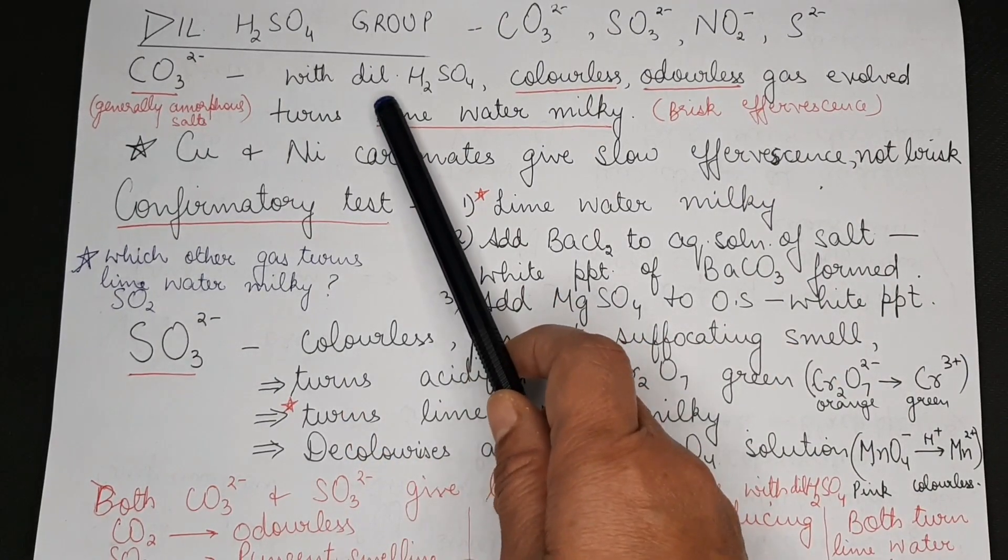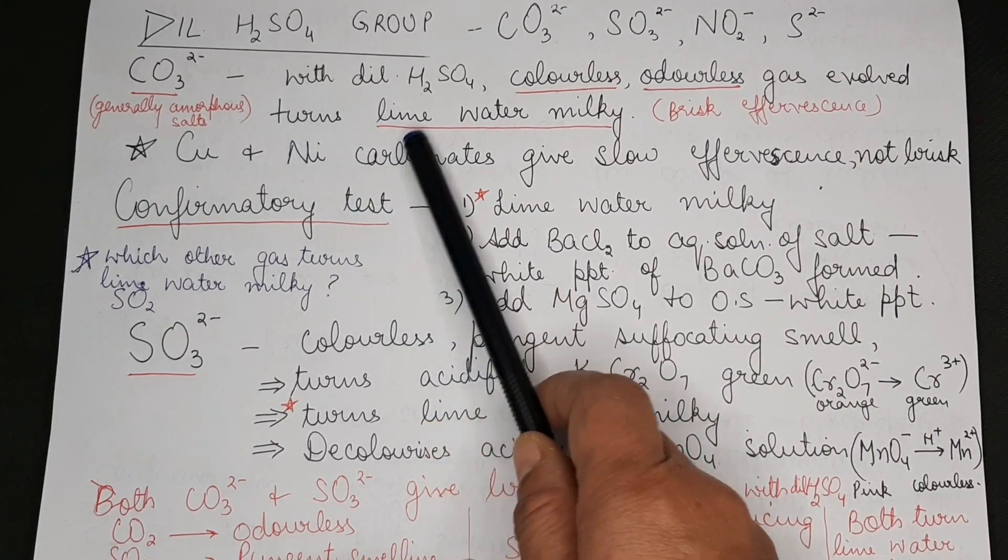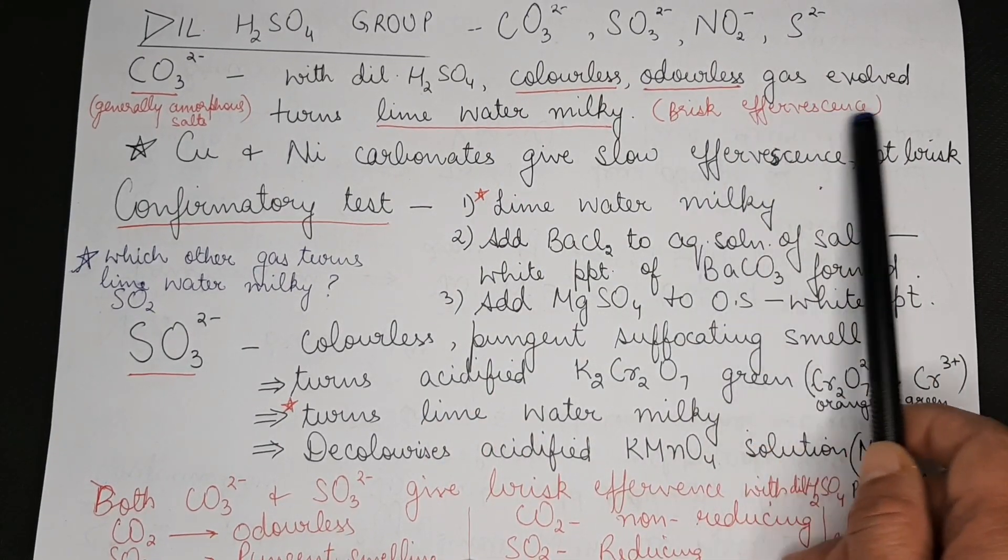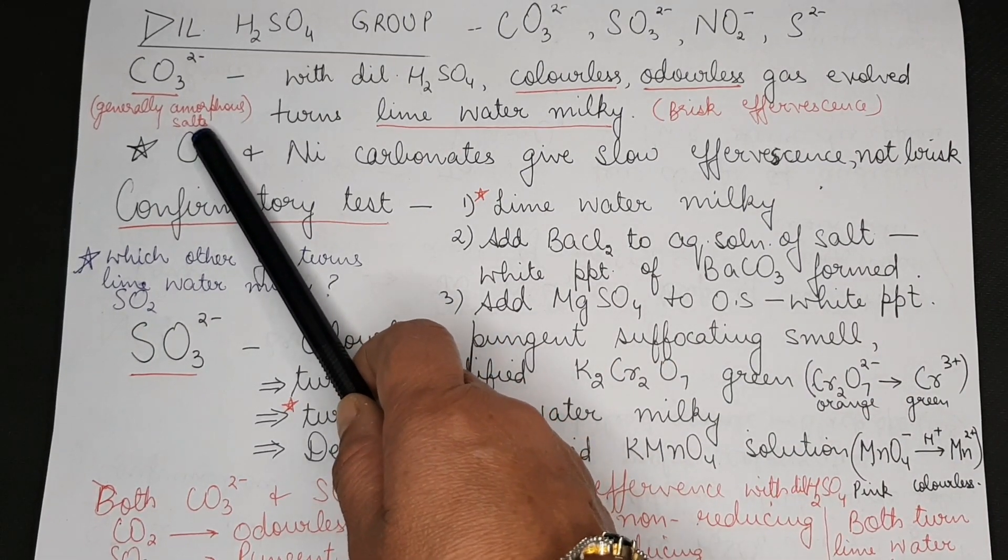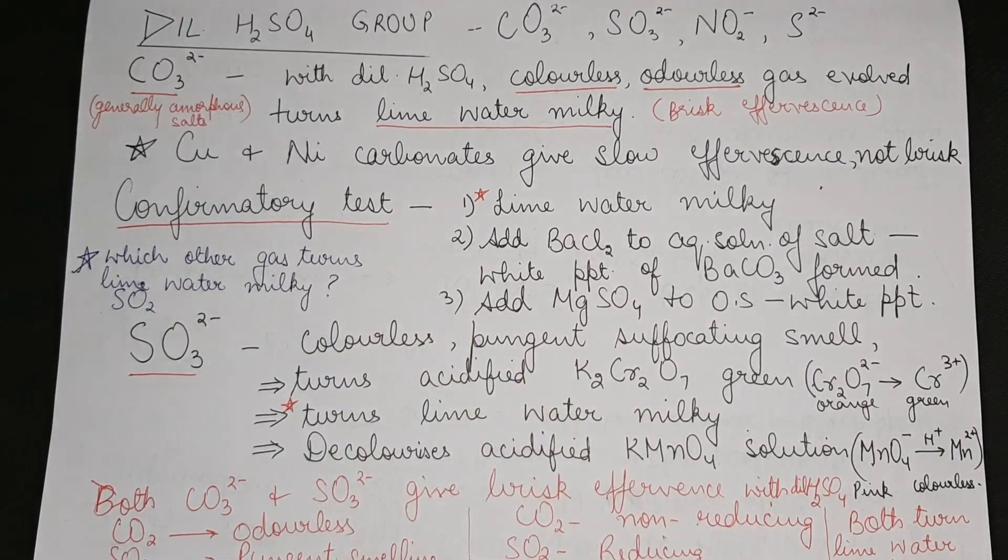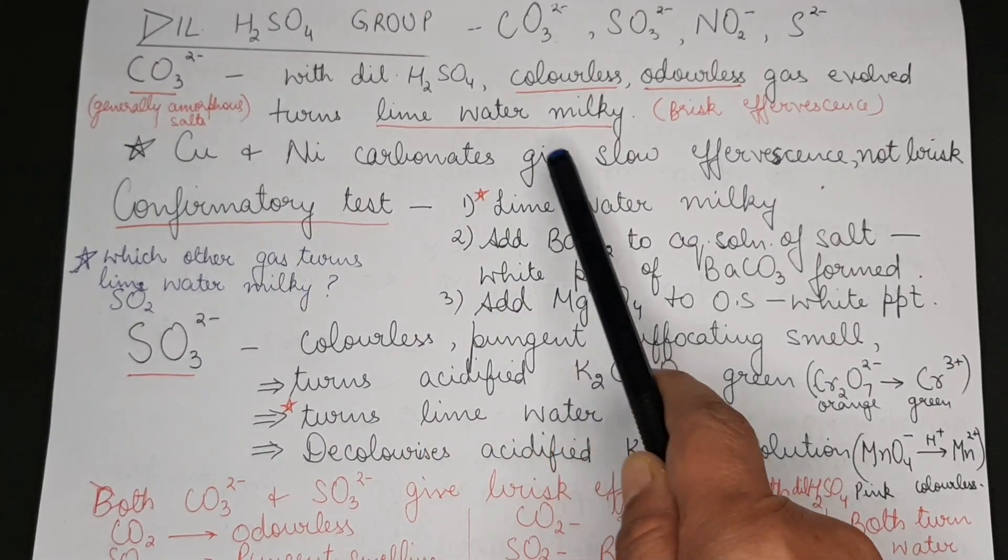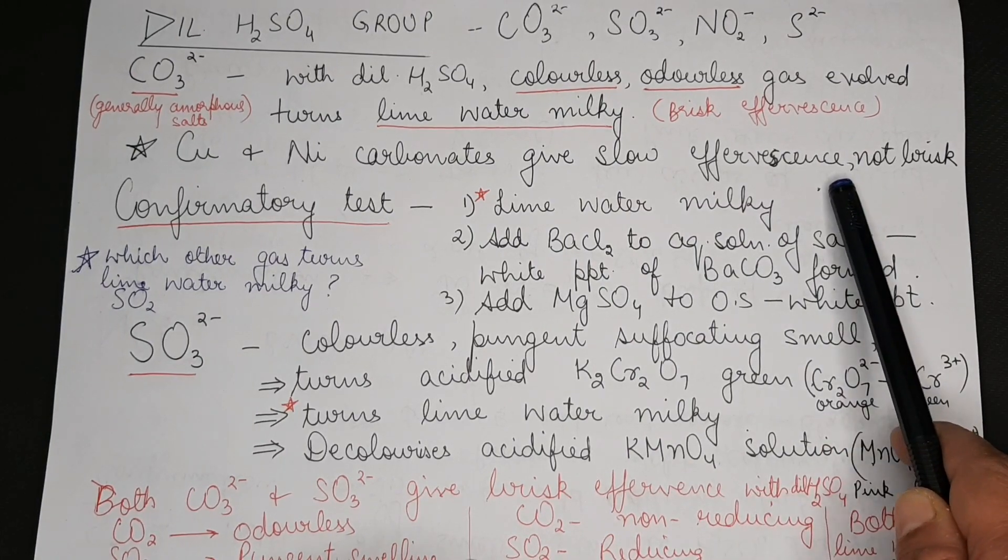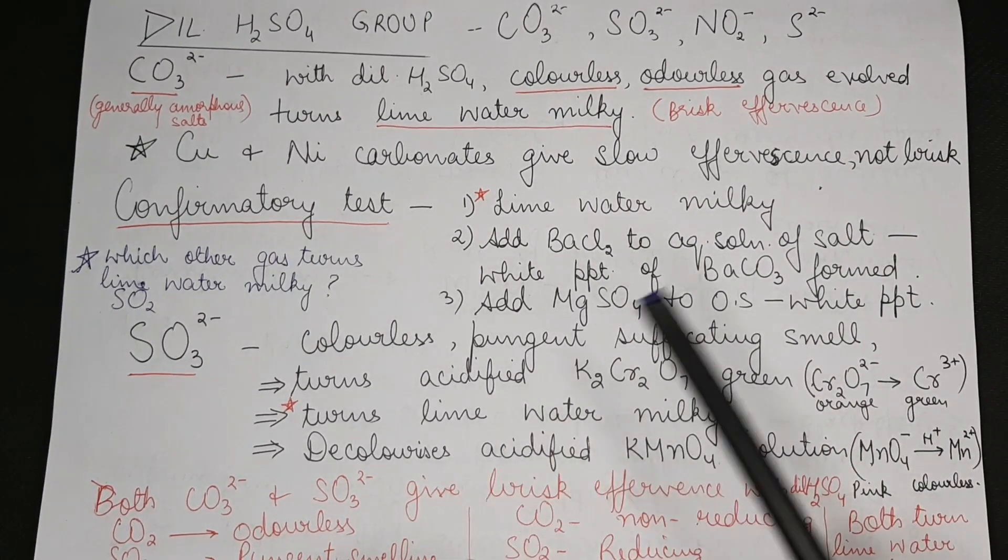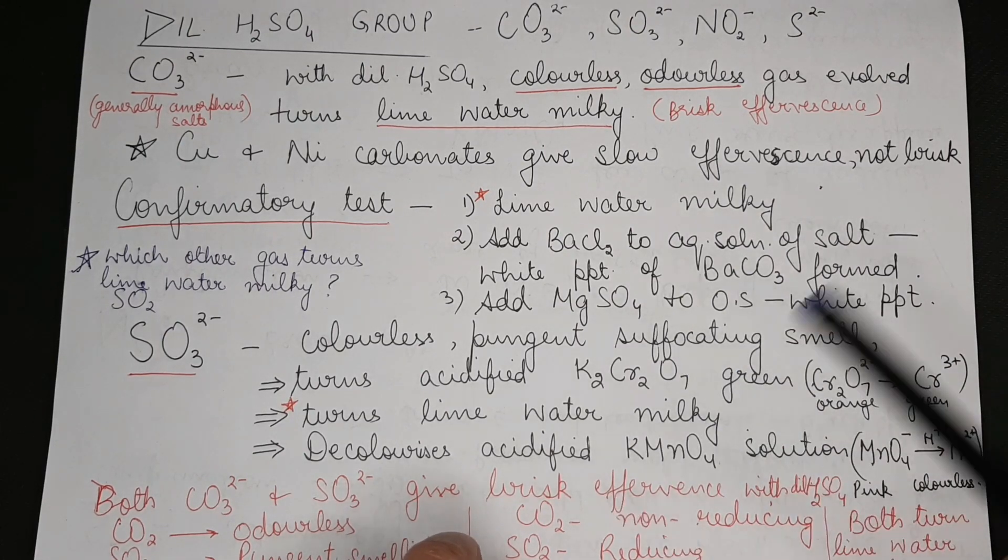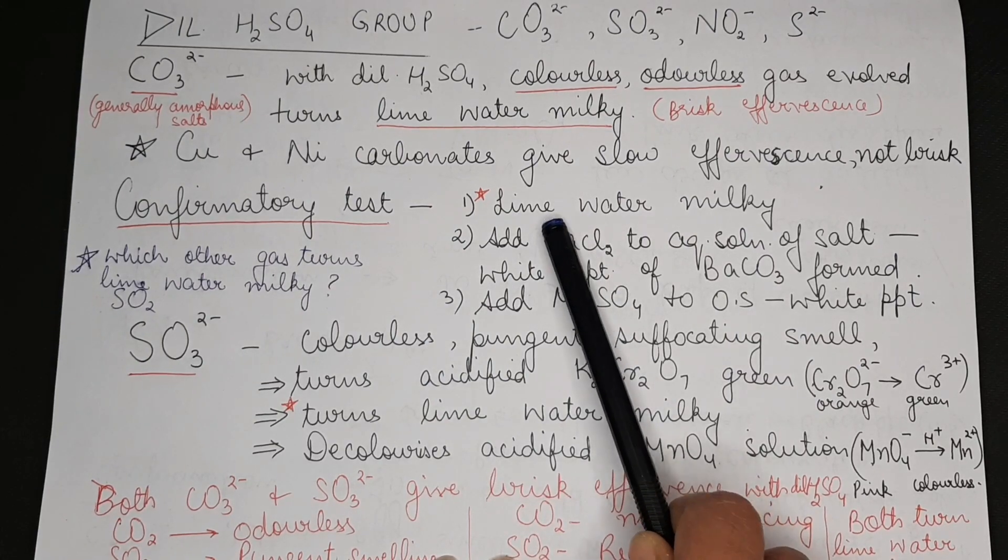Discussing dilute sulfuric acid group: carbonate, sulfide, nitrite, and sulfite. Carbonate: when dilute sulfuric acid is added, a colorless, odorless gas is evolved which turns lime water milky. Observation is a brisk effervescence. Carbonate salts are generally amorphous salts, that is they have a powdery look rather than a crystalline look. Copper and nickel carbonates give comparatively slow effervescence, it is not brisk.